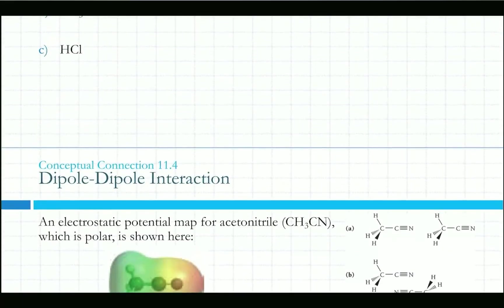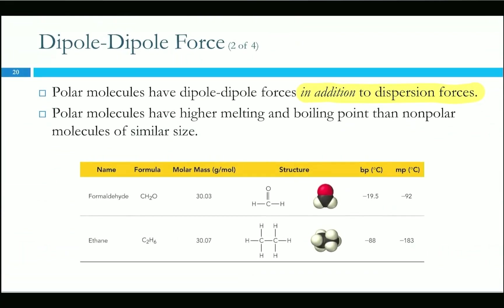Pentane only has dispersion forces, so it gets pushed out by the polar water. You can have something with a higher molar mass that only has dispersion forces and still have a higher boiling point than formaldehyde — like cooking oil, which is a liquid at room temperature, whereas formaldehyde's melting point is −92°C. The dispersion force always increases with molar mass, so at a high enough molar mass, dispersion forces can be stronger. We need to compare things of approximately the same size.